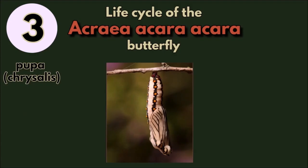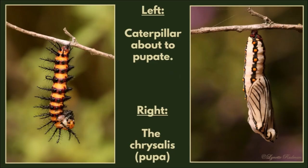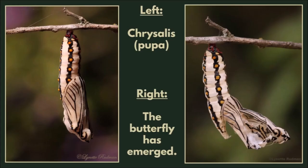Number three: pupa or chrysalis. On the left, the caterpillar is about to pupate, and on the right is the chrysalis or pupa. Next, on the left is the chrysalis or pupa, and on the right the butterfly has emerged.